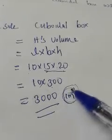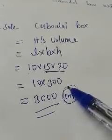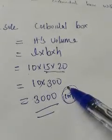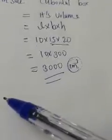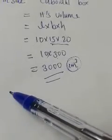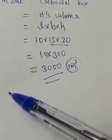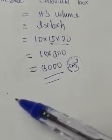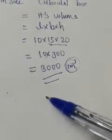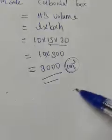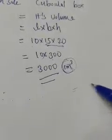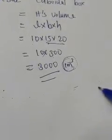Don't forget to write the conclusion. So the amount of air inside the cuboidal box is equal to 3000 cm³. Moving on to the second question.